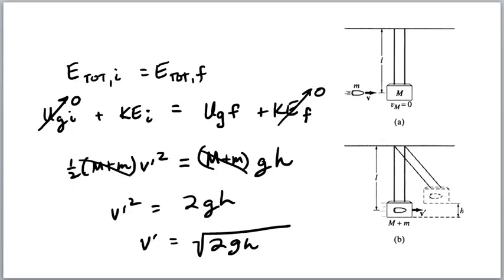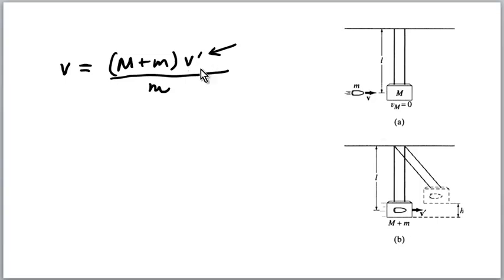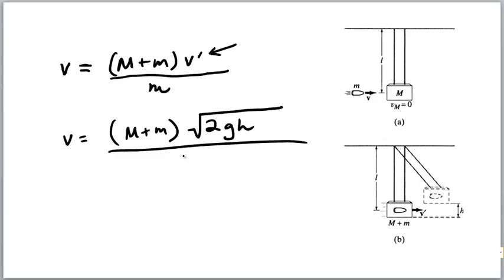So, we go back to the original equation and plug in the square root of 2 g h, and we get M plus m, here, square root of 2 g h, all over m.